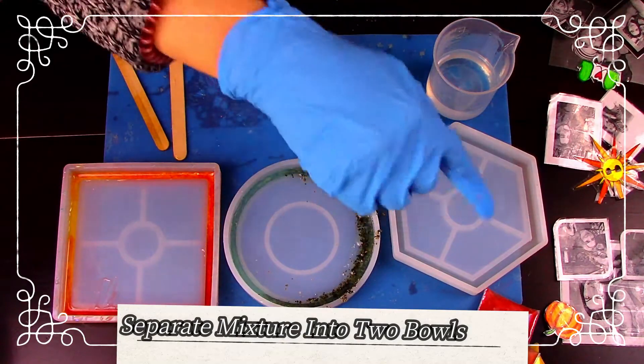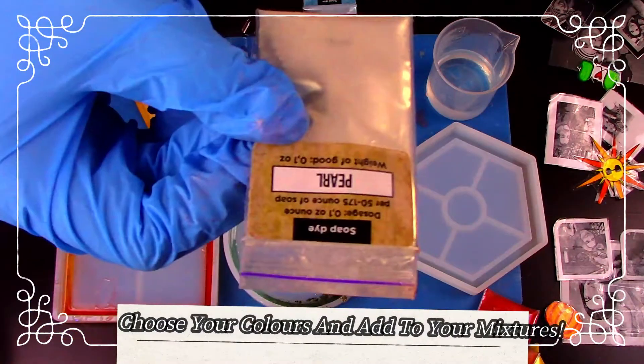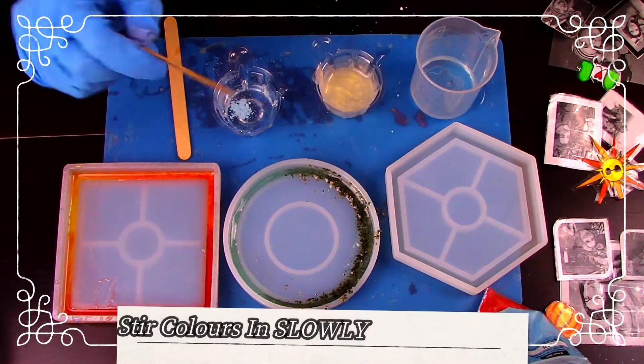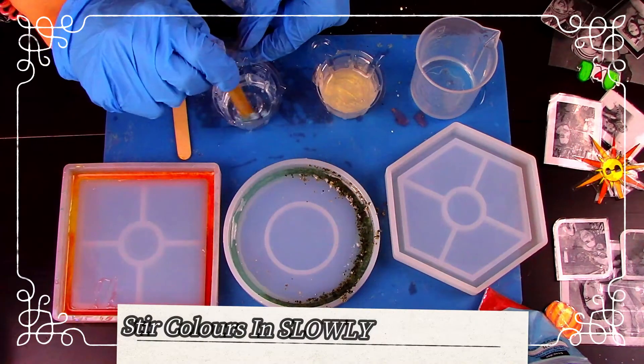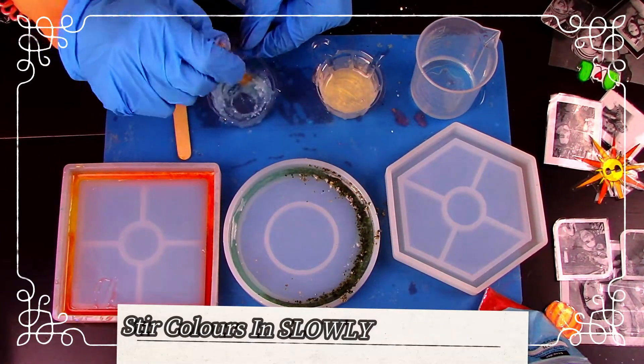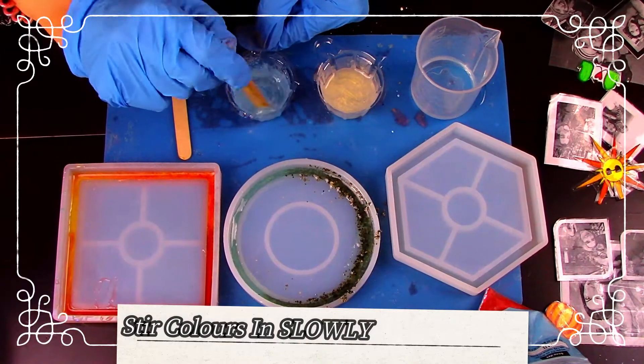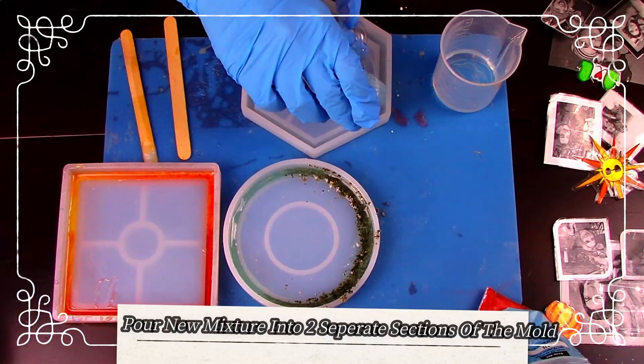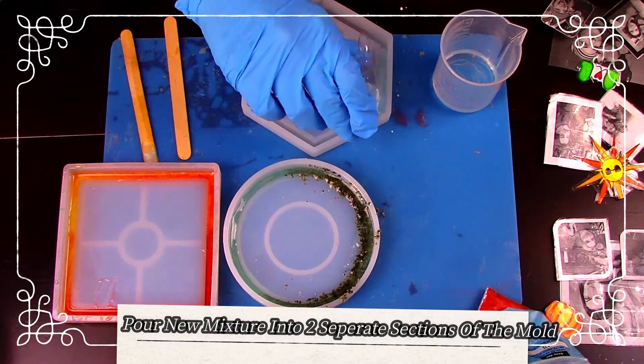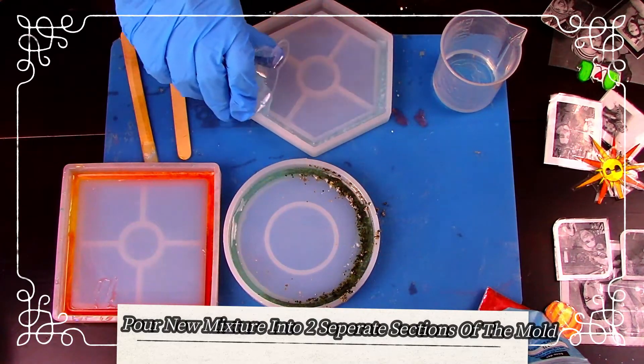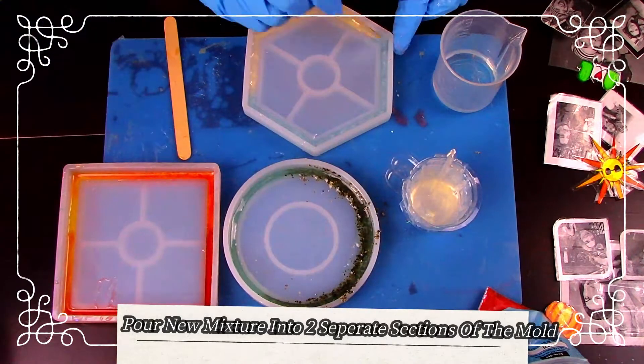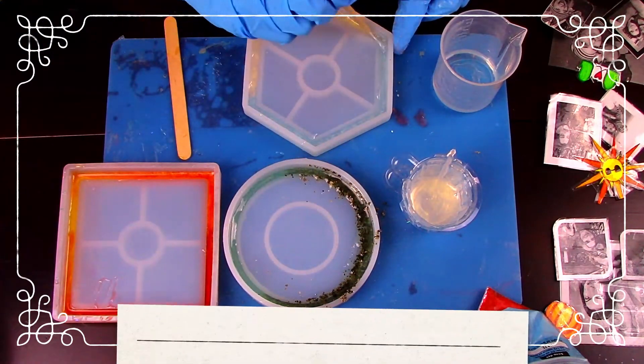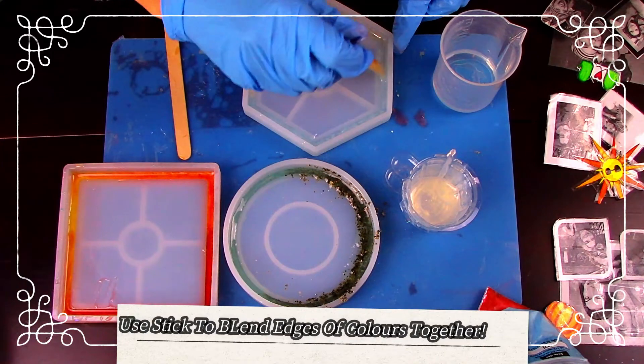Now let's move on to the winter mold. Choose your two colors and add them to your mixtures. Then just mix your colors into your mixtures. Just like what we did with our autumn mold. Pour your resin into two separate areas. Don't forget to blend those edges with a popsicle stick when you're finished pouring your resin.